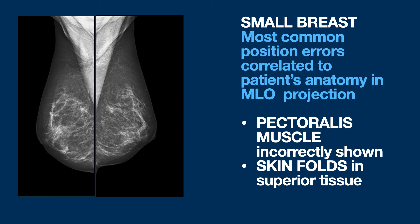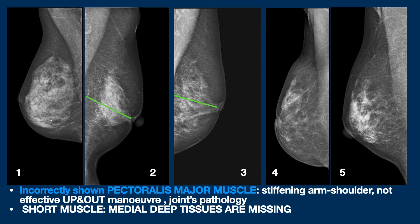On the deep tissues, one often notices in women with small breasts and a very slender thorax both an incorrect documentation of the pectoralis muscle and the presence of folds in the upper part. It can be a concave-shaped muscle, as in figure 1 — possibly due to stiffening of the patient at arm-shoulder level, or in this specific case, an up-and-out maneuver that was not properly performed. It can also be, as in figures 2 and 3, a muscle that is too short.